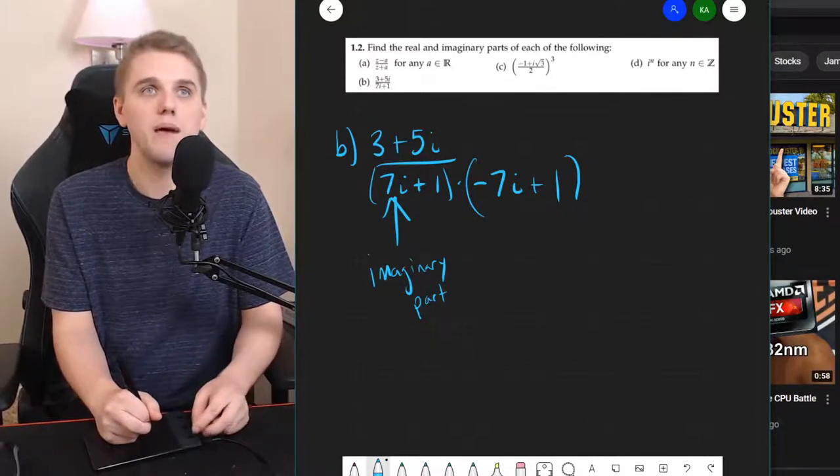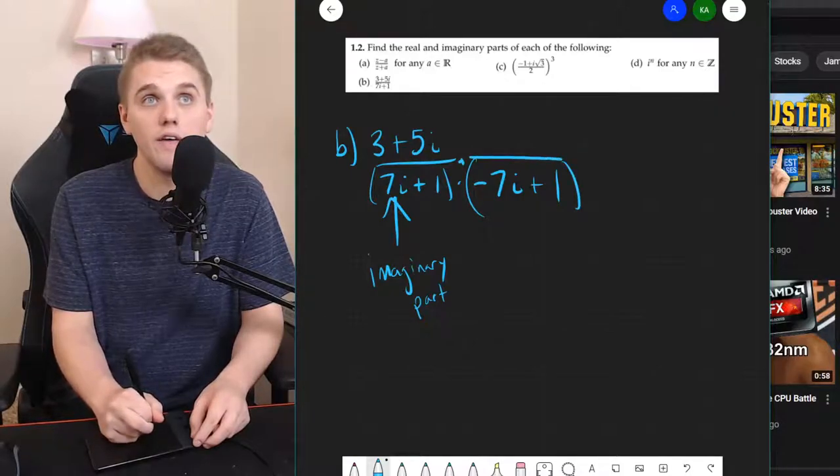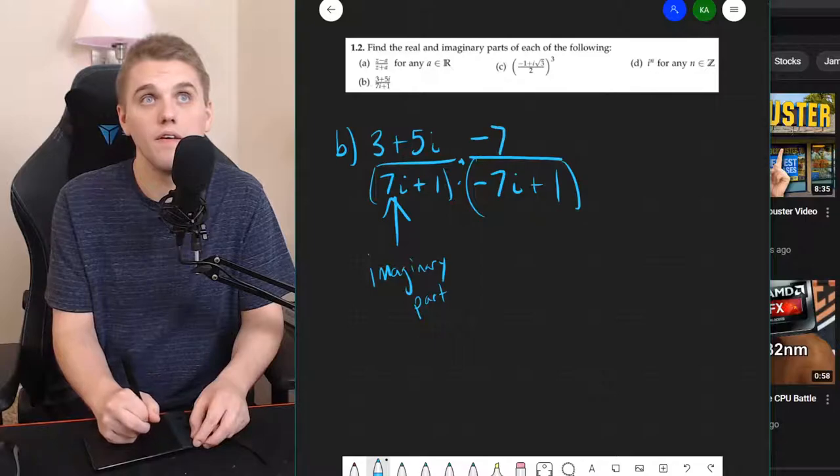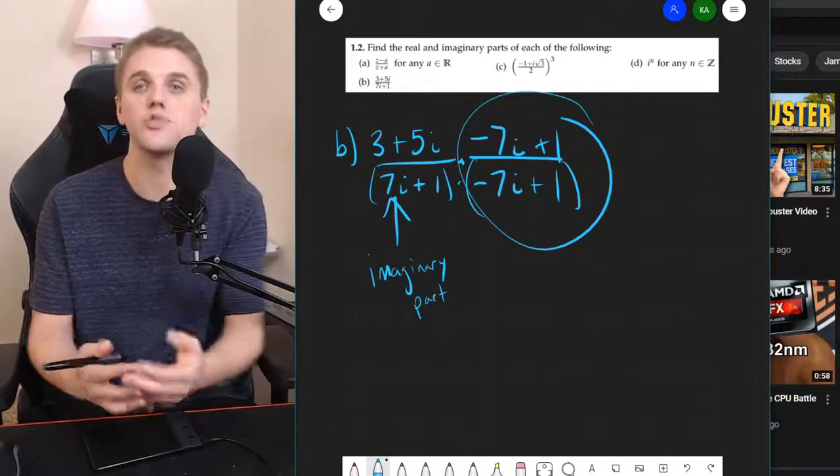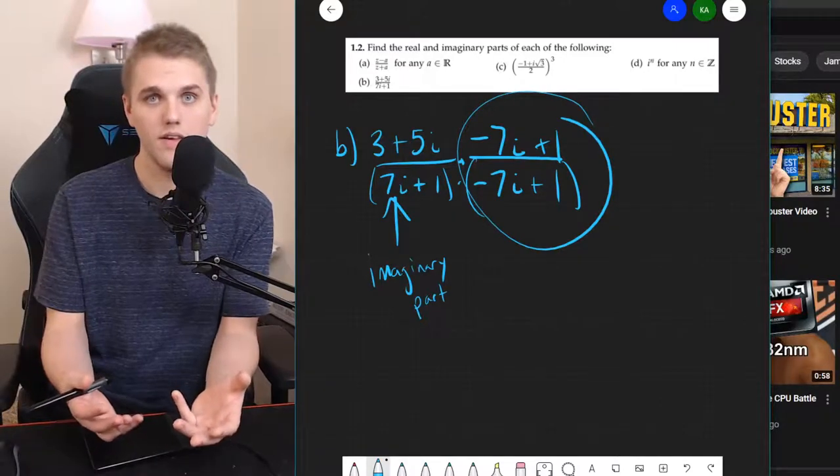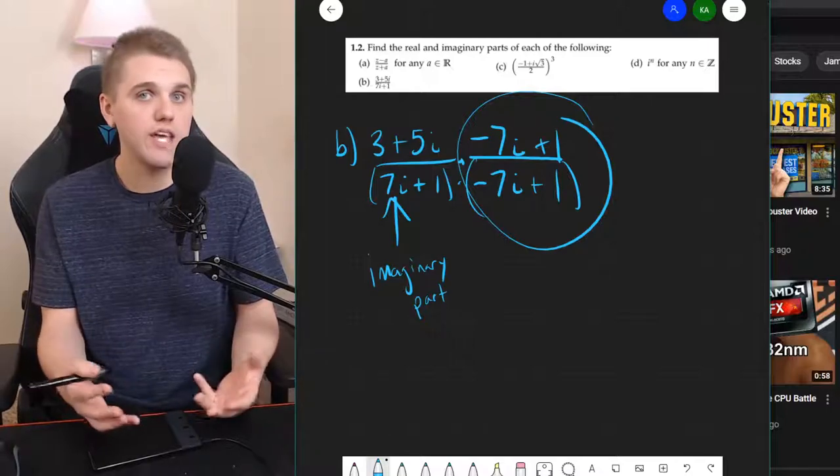I have to multiply by specifically 1. This right here what you're looking at is just 1. Any complex number divided by itself is just 1.